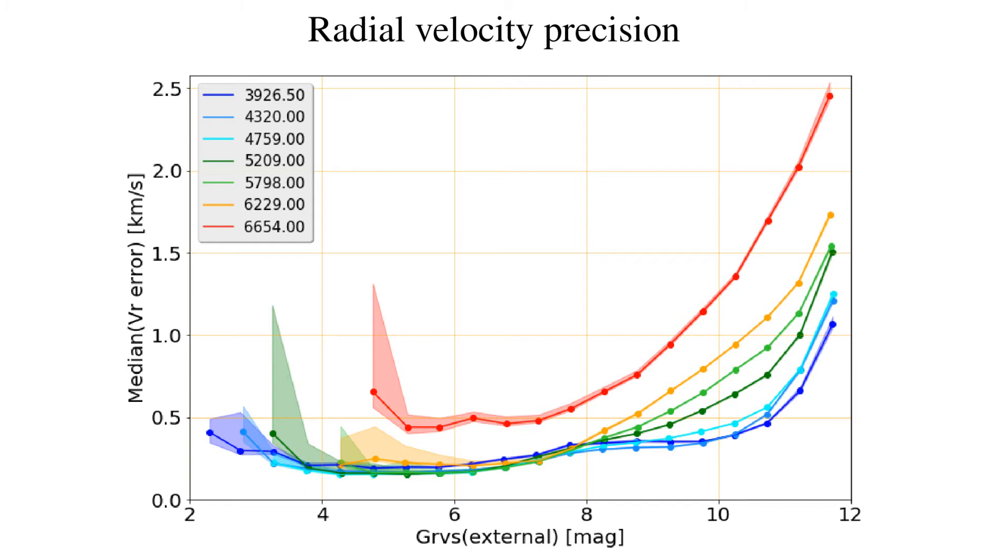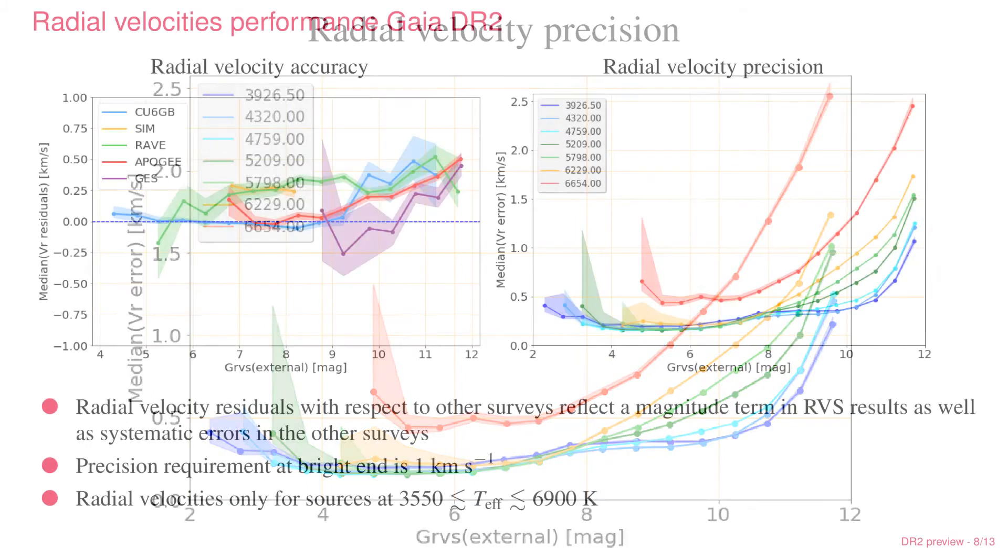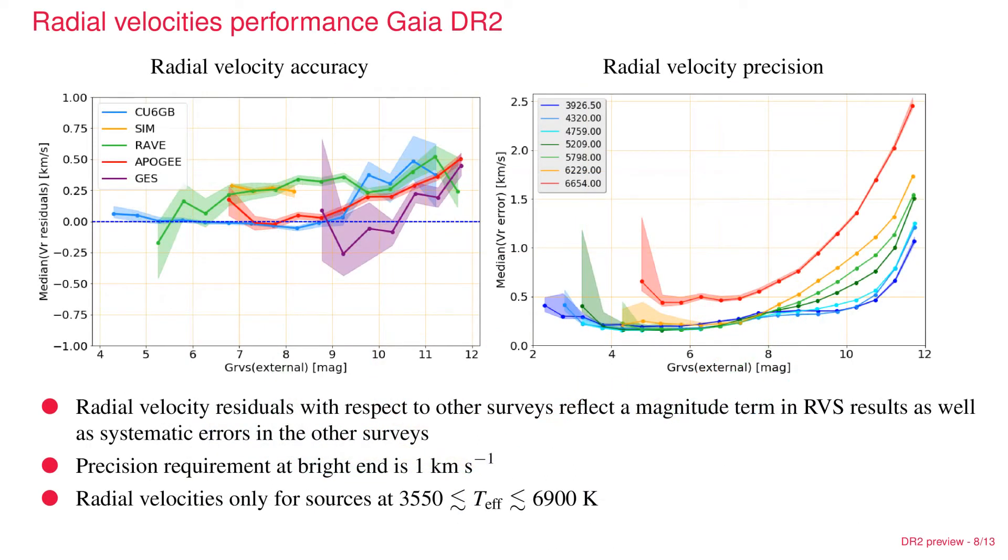This means that already at this stage, the first release of radial velocity data, we are well below what was required in terms of performance before the launch of Gaia. Towards the faint end, the accuracies go up to one to two kilometers per second. This means that the six or seven million radial velocities that we put out are really very accurate and can lead to exquisite kinematic studies.